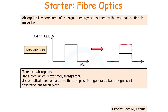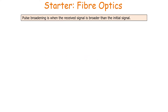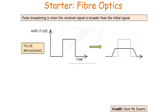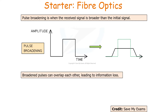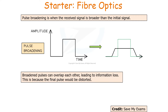The other way a signal can undergo degradation is via pulse broadening. Pulse broadening is when the received signal is broader than the initial signal — the signal has spread out over a larger distance. This is extremely important because when broadening pulses overlap each other, information can be lost as you can't determine what the signal is showing. The final pulse at the end of the fibre optic would be distorted.